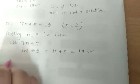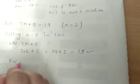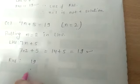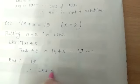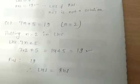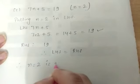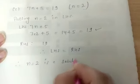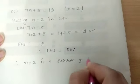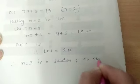And see, in RHS, it is also 19. It means, LHS equal to RHS. So, we will write, n equals to 2 is a solution of the equation.